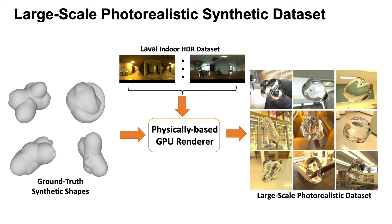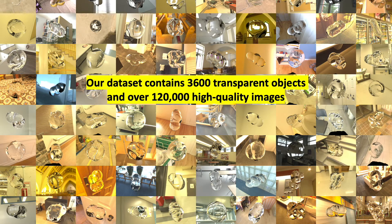For our synthetic dataset, we generate composited scenes from shape primitives as ground truth. Using large indoor HDR environment maps as the lighting, we render a large-scale photorealistic synthetic dataset with a customized GPU-based renderer. Our synthetic dataset contains 3,600 transparent objects, with 35 images from randomly sampled viewpoints each, giving over 120,000 images.